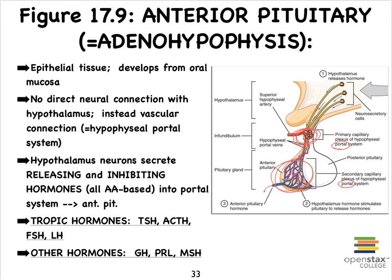How does this anatomy of these capillary beds relate to the mechanism by which the hypothalamus controls the anterior pituitary? In the hypothalamus, we have so-called neurosecretory cells — neurons that are going to produce hormones. These are going to be our releasing hormones or inhibiting hormones, and notice that they're all amino acid-based; none of these are going to be steroid-based.